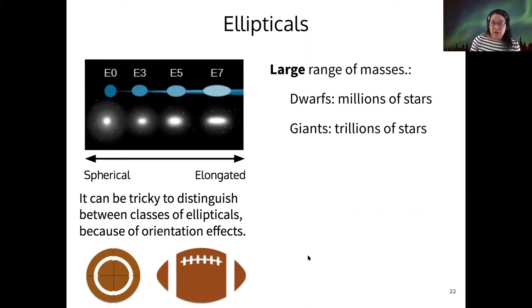All right, the elliptical galaxies also come in a large range of masses. So the dwarf ellipticals, these are the most common galaxies in the universe, they only contain millions of stars, whereas giant ellipticals can contain up to trillions of stars. And the Milky Way is an example of a barred spiral. It's a fairly large barred spiral and contains billions of stars.